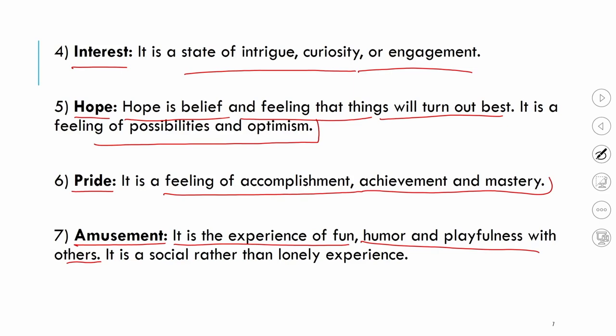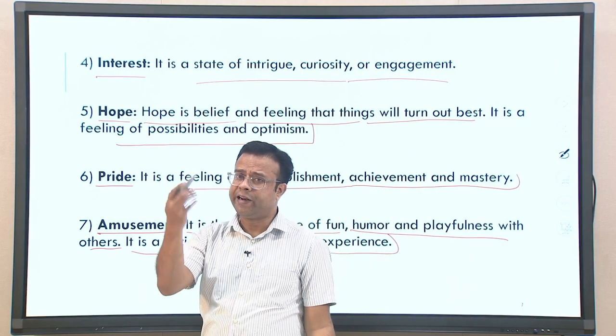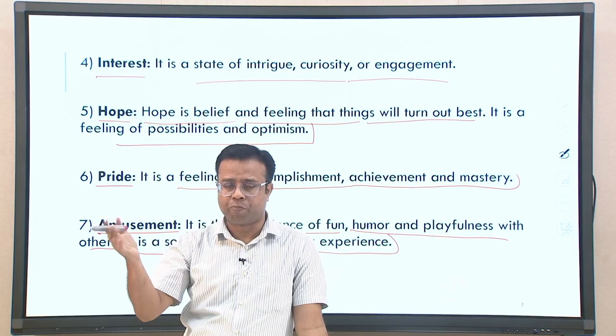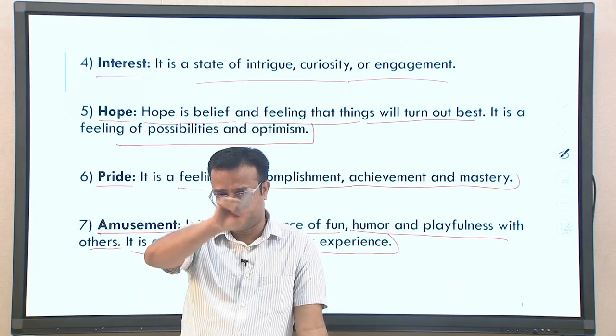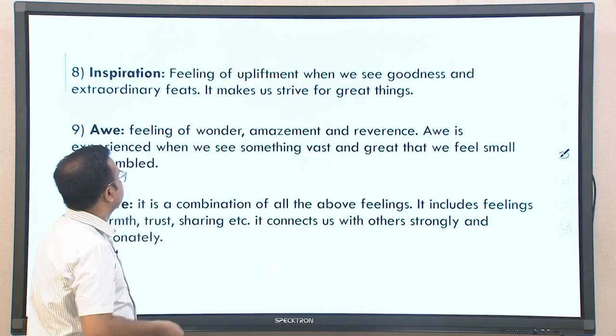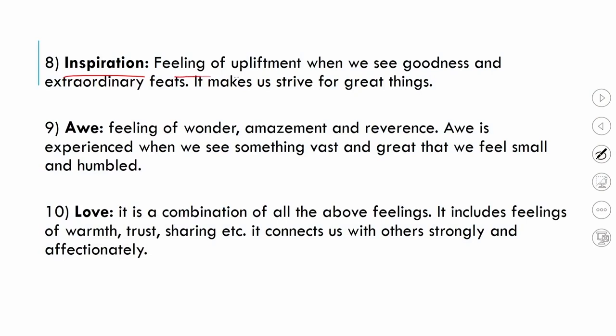The seventh positive emotion is amusement — the experience of fun, humor, and playfulness with others. Amusement is experienced only in the context of other people; it is more social rather than individually experienced. Many other emotions can be experienced alone in one's private world, but amusement is experienced in the context of social gatherings.